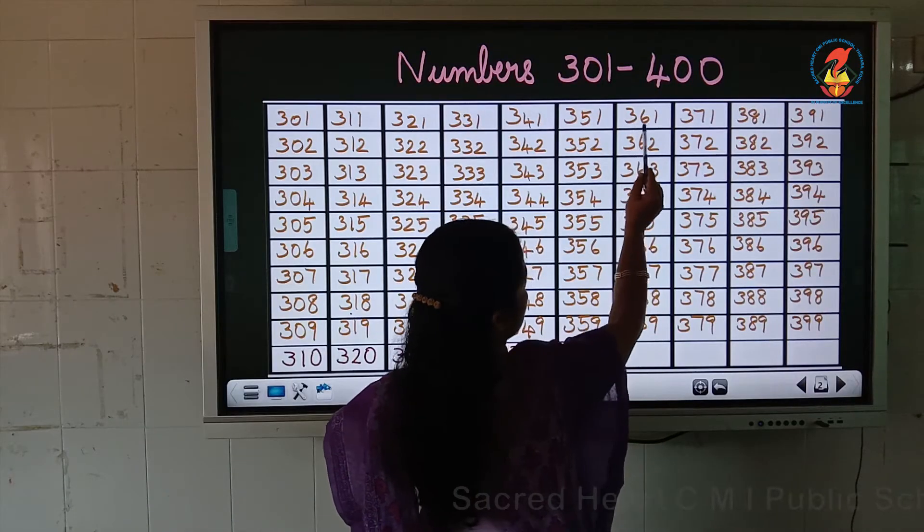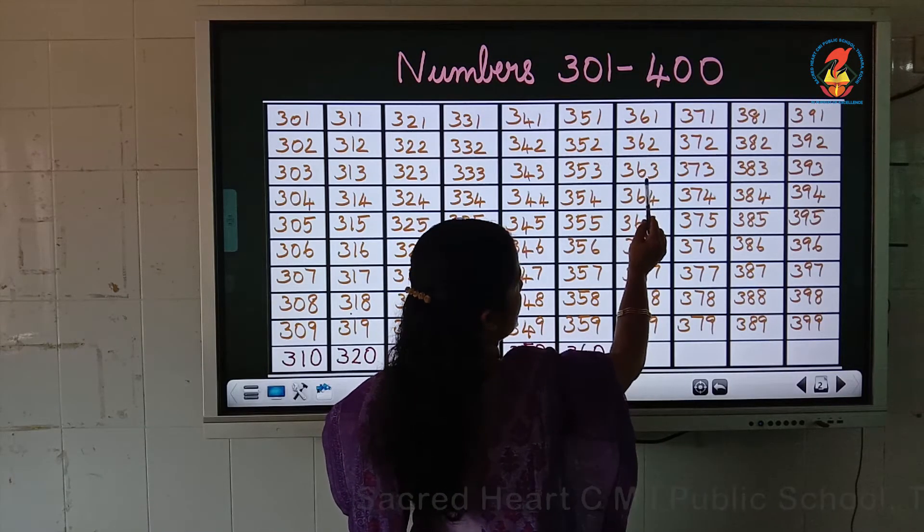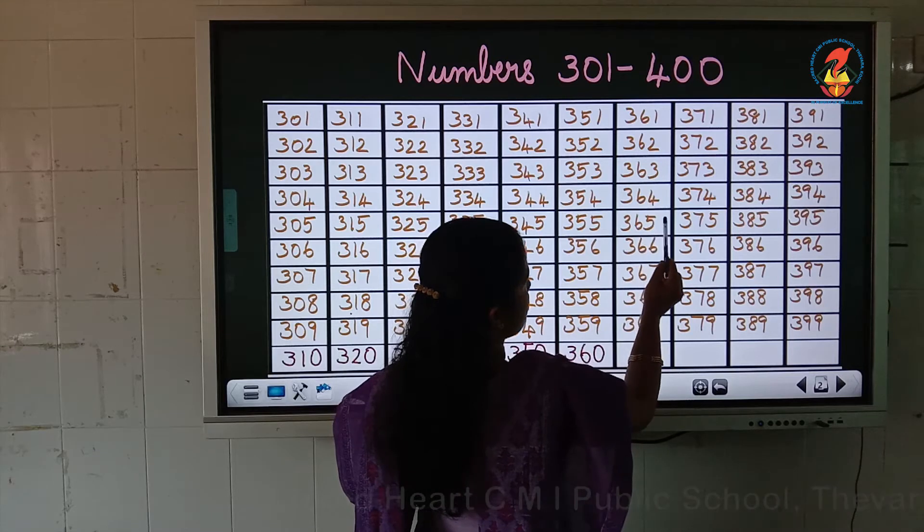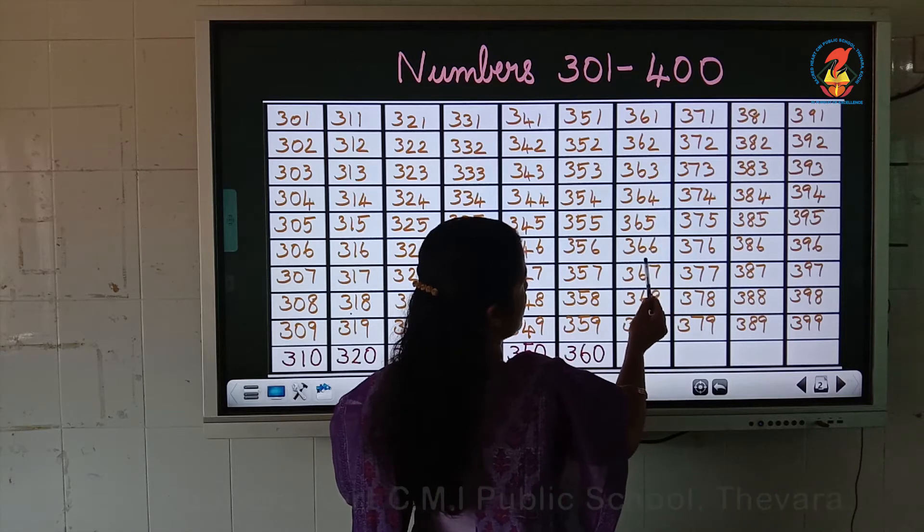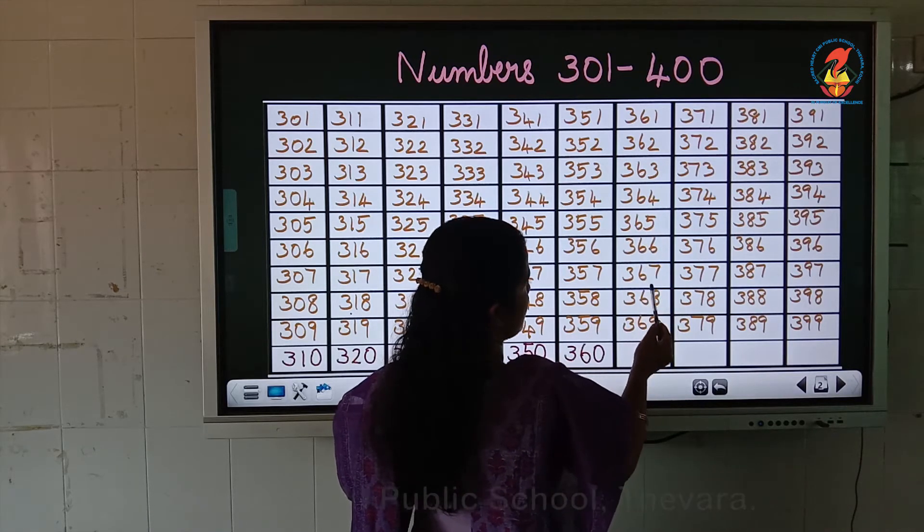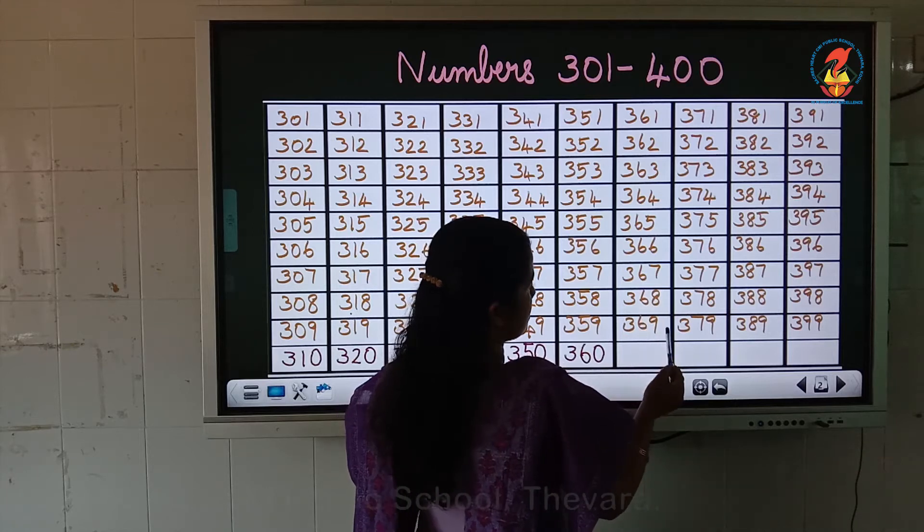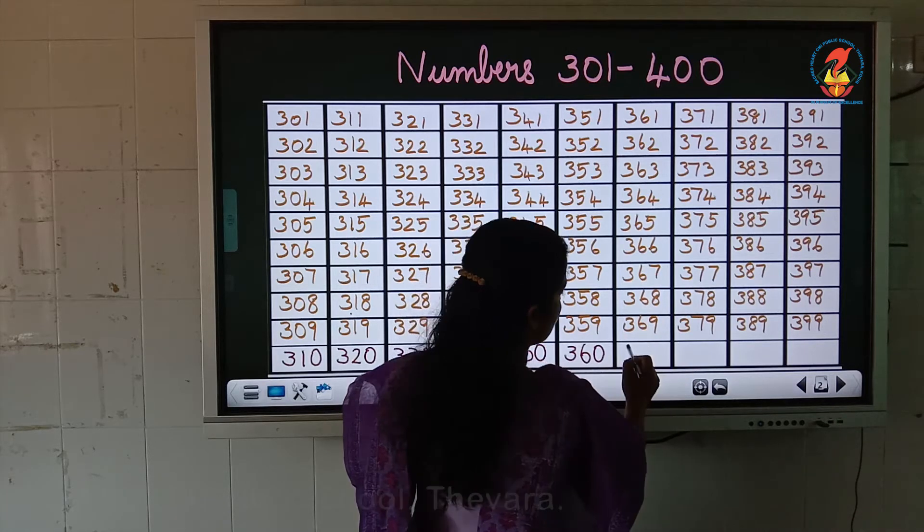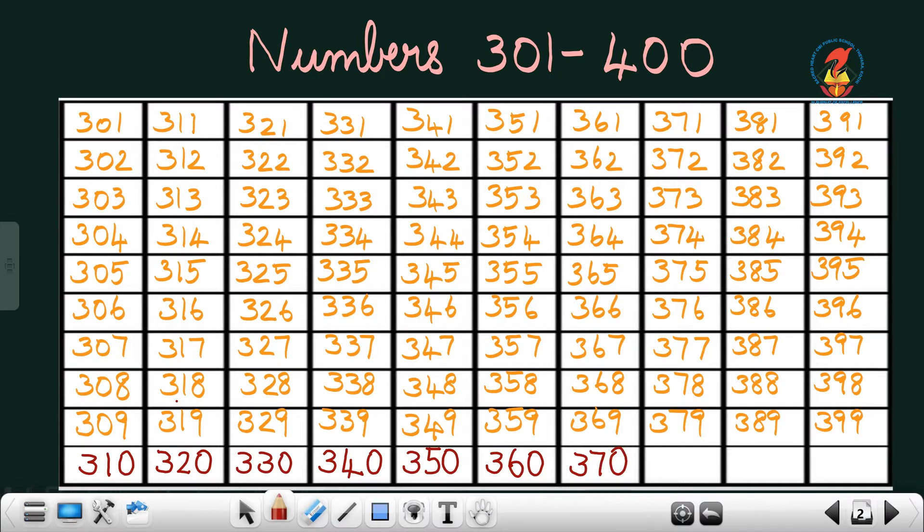After 360, 361, 362, 363, 364, 365, 366, 367, 368, 369, 370.